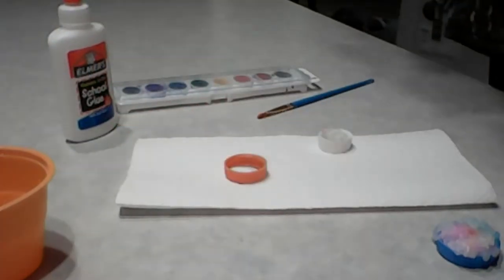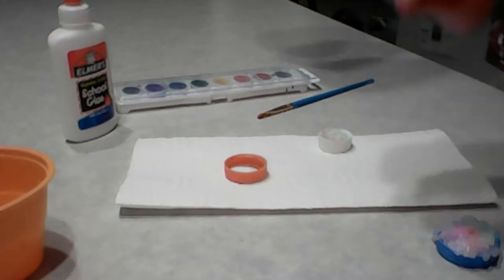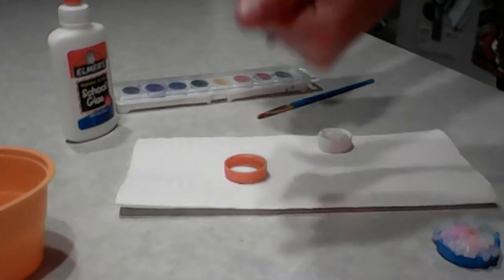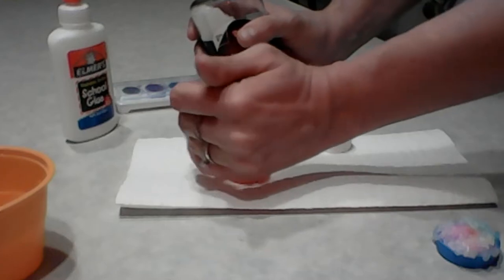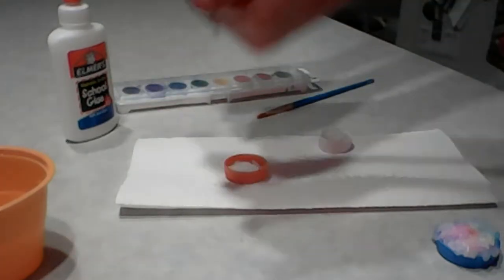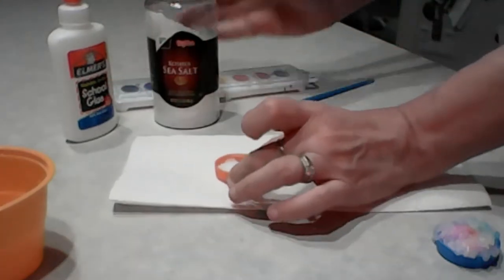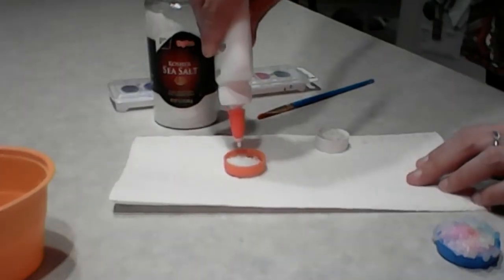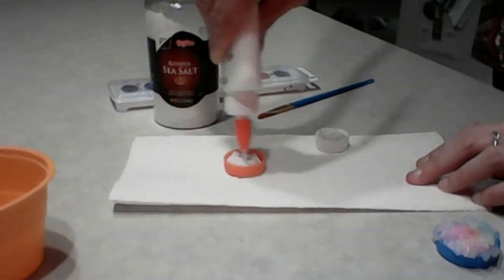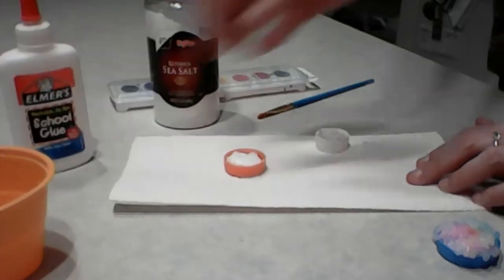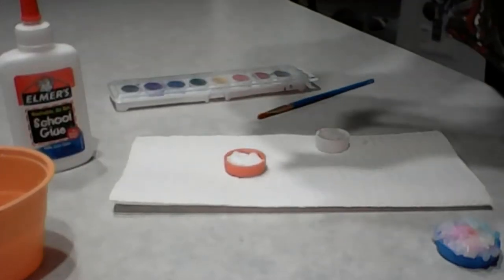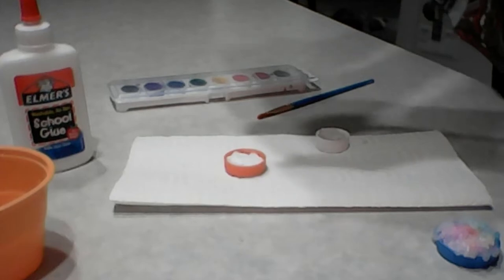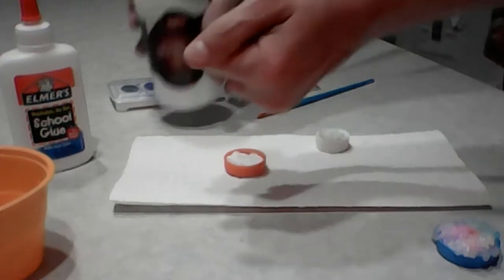And then I'm going to put a layer of sea salt right on top of that. Okay, so so far it looks like this. Next I'm going to repeat the process: glue to cover that first layer of sea salt, and we're going to put on another layer of sea salt.